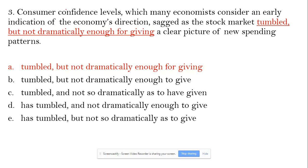So let's talk about the answer choices. 'Tumbled' is fine, but the problem is 'for giving' — because this expresses purpose, it should be 'to give,' not 'for giving.' So 'enough to give a clear picture' is the correct form. Answer choice A is out.